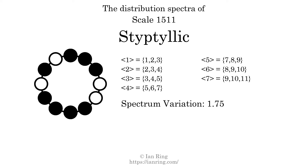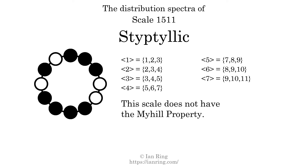The spectrum variation is the sum of all the widths, divided by the number of tones. The spectrum variation of this scale is 1.75. Since the variation is greater than 0, this indicates the scale is not perfectly even. The highest spectrum width is 2, and since this is greater than 1, this scale is not maximally even. This scale does not have the Myhill property. Since the generic interval ranges overlap, this scale is an improper scale.